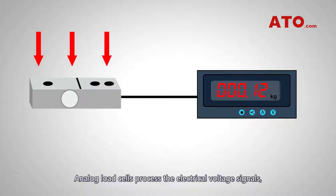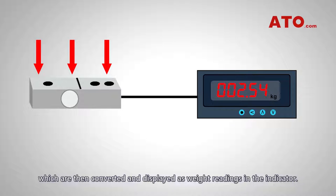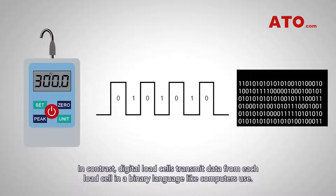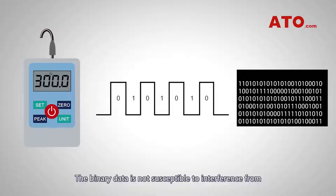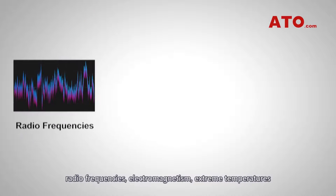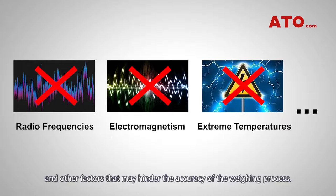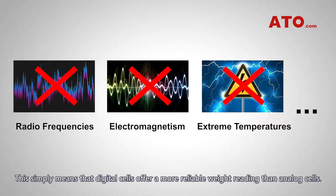Analog load cells possess electrical voltage signals, which are then converted and displayed as weight readings in the indicator. In contrast, digital load cells transmit data from each load cell in a binary language like computers use. The binary data is not susceptible to interference from radio frequencies, electromagnetism, extreme temperatures, and other factors that may hinder the accuracy of the weighing process. This simply means that digital cells offer a more reliable way of reading than analog cells.